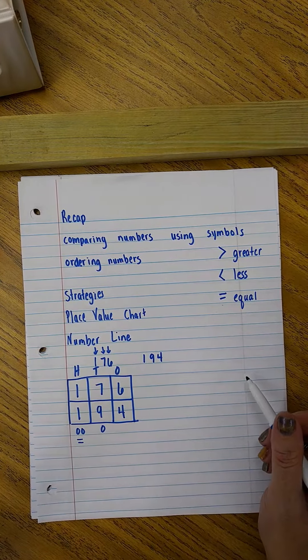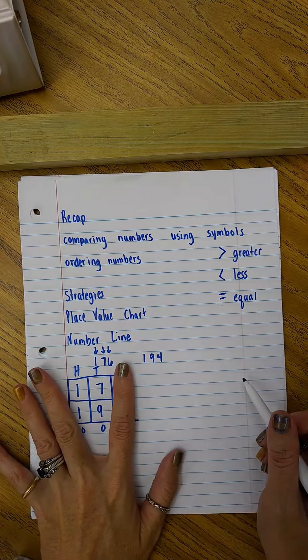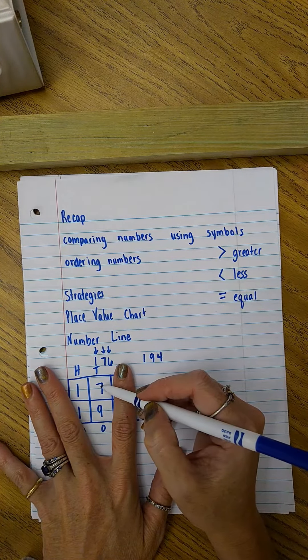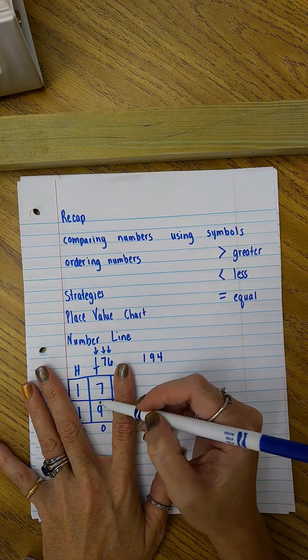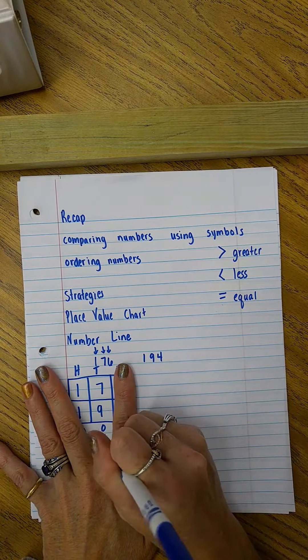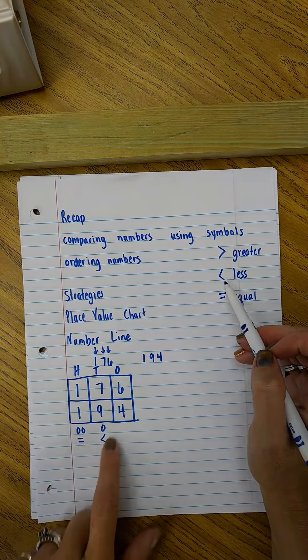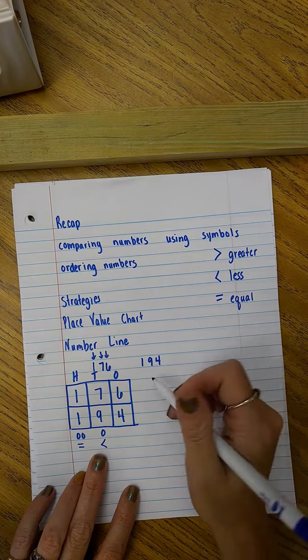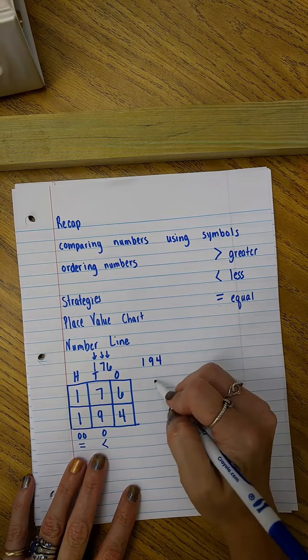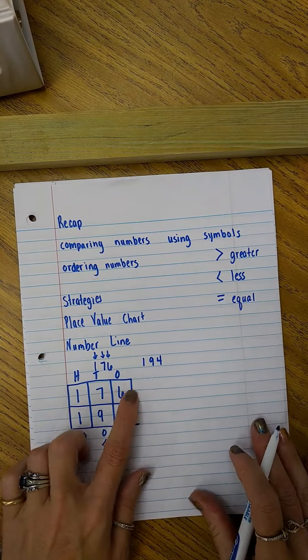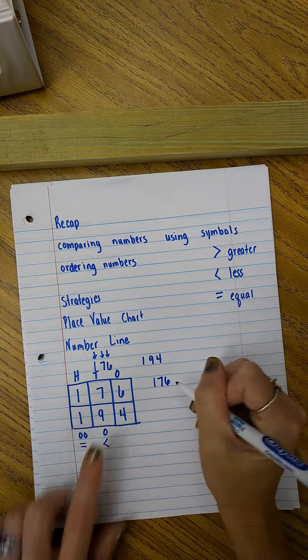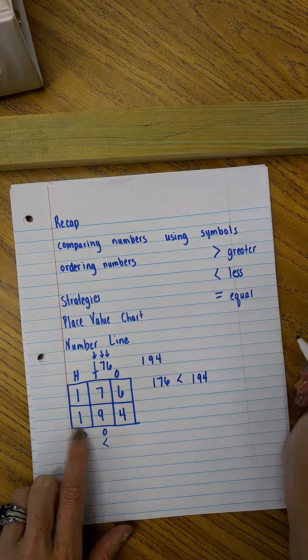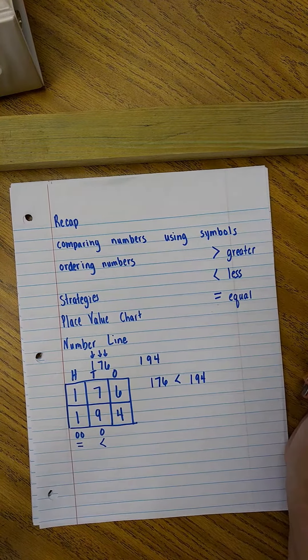Since they're equal, I have to go to my next place value which would be tens. I look at these two numbers, I see the seven is first. Seven is less than nine, so I'm gonna do the less than sign like here. And once I do that I don't even have to compare this next row. So now I can compare these using symbols and I write them in the same order. 176, and I use that symbol, is less than 194. So I have just compared those.